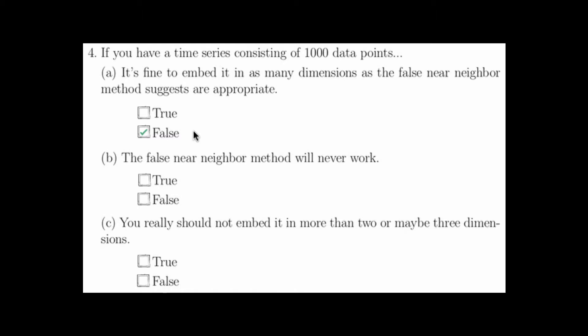This doesn't mean, however, that the false nearest neighbor method will never work for this time series. For example, the time series may be just fine to embed in 2 or 3 dimensions, and in this case, this method would work just fine. So b is false.